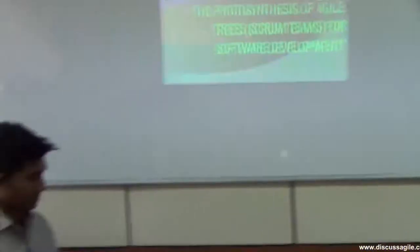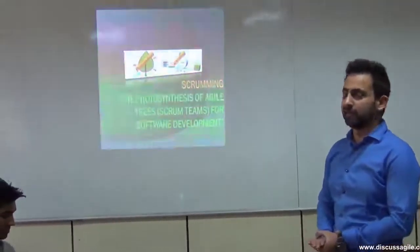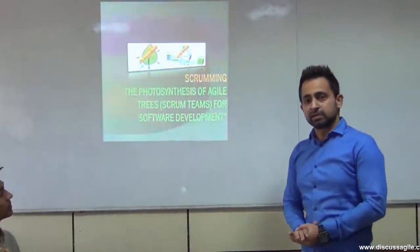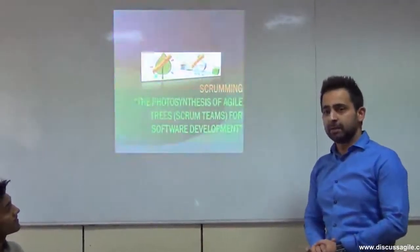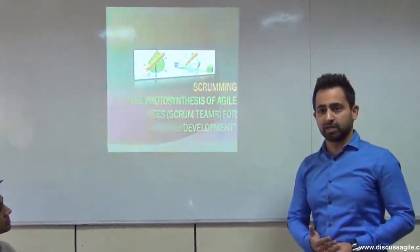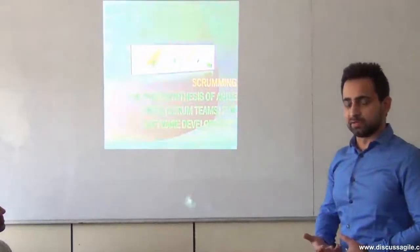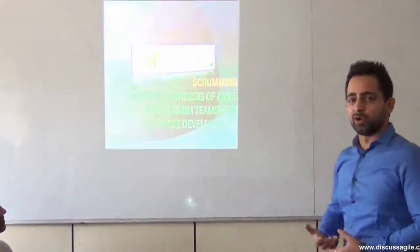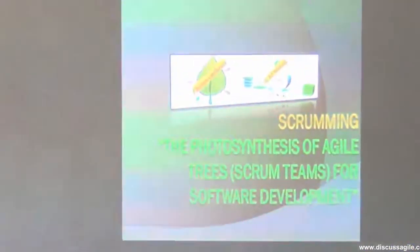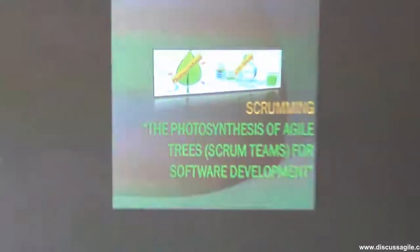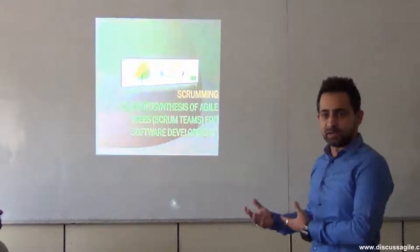I think everybody here is aware of at least the basics of Scrum. This session is primarily an analogy where I have compared photosynthesis with Scrum for successful software development. It's like the photosynthesis of agile trees for software development. From my last five to six years of experience, I have learned that as we grow in an organization and apply Scrum, the more we apply agile principles and the actual mindset to it, the more value we get out of it. It's not a silver bullet — the effect takes time. That's why this analogy helps us compare Scrum with the photosynthesis model.